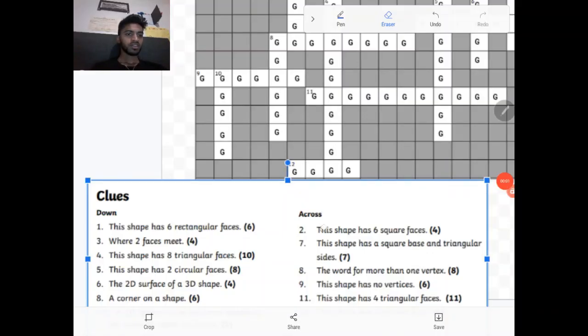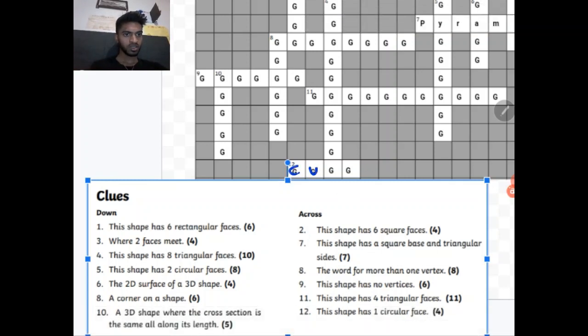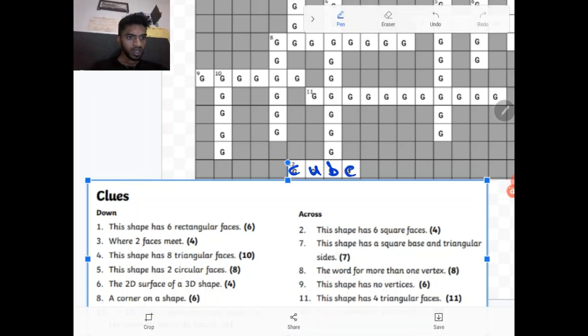Now let's have a look at the clues across. Number 2 across. This shape has six square faces. Four letter word. The word is number 2 across. C-U-B-E cube. This shape has a square base and triangular sides. And so that would be a square base pyramid. Or you can call it just a regular pyramid.